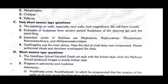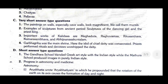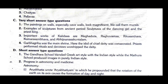Question three: Name a few important works of Kalidasa. Important works of Kalidasa are Meghaduta, Raghuvamsha, Ritusamhara, Kumarasambhava, and Abhijnanashakuntala. Question four: Define the term Garbhagriha. Garbhagriha is the main shrine where the idol of the chief deity was consecrated; priests performed rituals and devotees worshiped the deity.